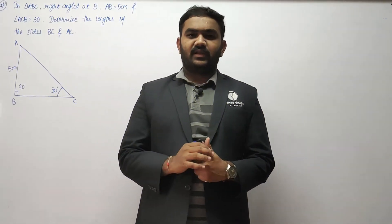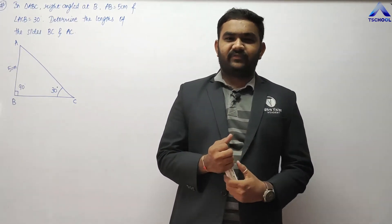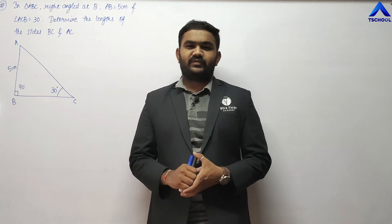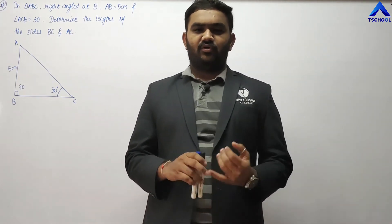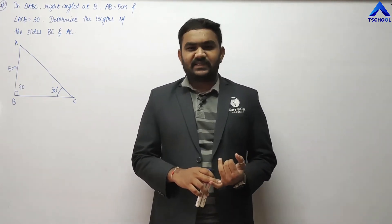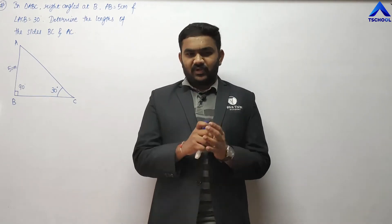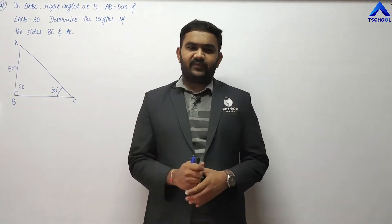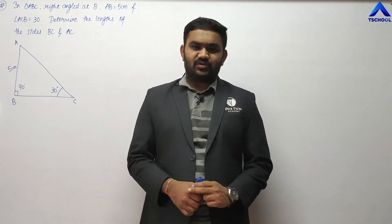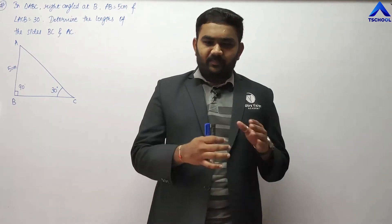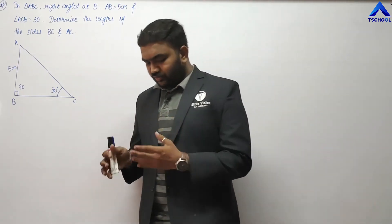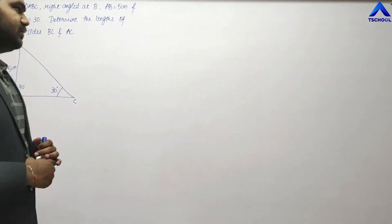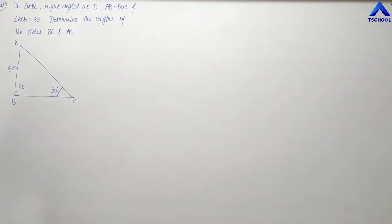Good morning friends. In the previous lecture we completed the trigonometric ratios for specific angles — angles 0, 30, 45, 60 and 90. We have seen all of the ratios, a total of 30 ratios, in the previous two video lectures. Now we are going to start with the sums related to the trigonometric ratios for some specific angles.